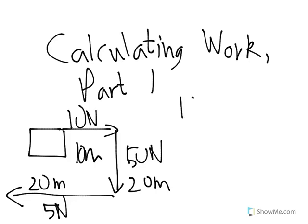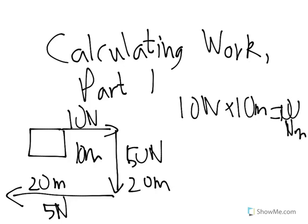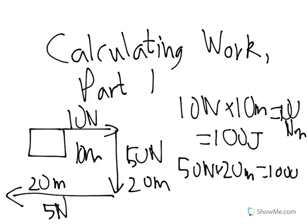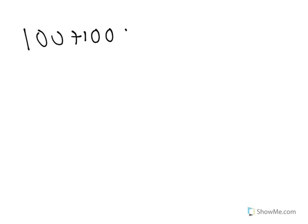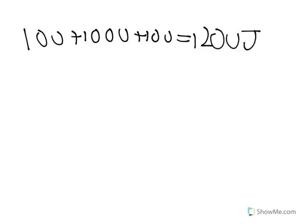So let's start with 10 newtons times 10 meters. 10 newtons times 10 meters is 100 newton meters. And if you remember, that's 100 joules. A newton meter is a joule. Same goes with 50 newtons and 20 meters. That's going to come out to 1,000 joules. And then 5 newtons times 20 meters is 5 times 20, that's another 100 joules. So let's add all that together. 100 plus 1,000 plus 100 equals 1,200 joules. So that's the total amount of work that this person did on the box.